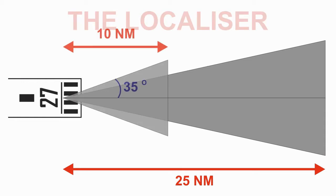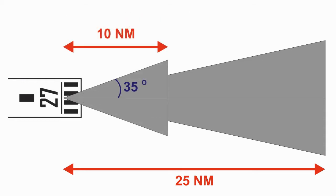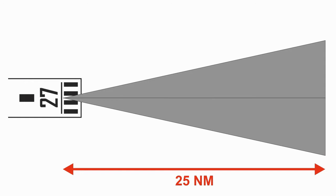Within 10 miles, the beam will be 35 degrees each side of the centerline. Outside 10 miles, this will reduce to 10 degrees either side of the centerline. This is to cover safety and sensitivity issues. However, in this video we will look at the basic design.